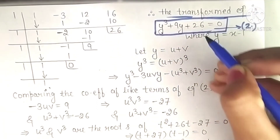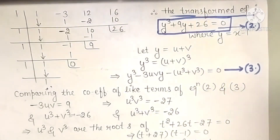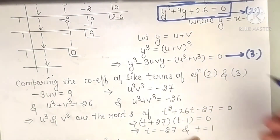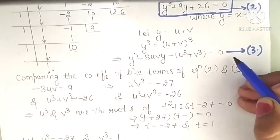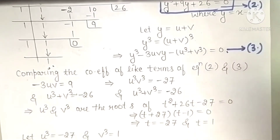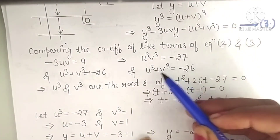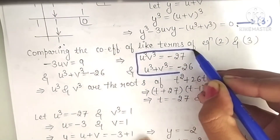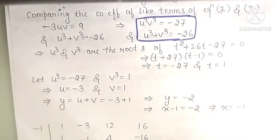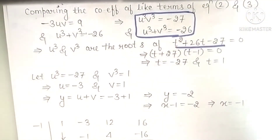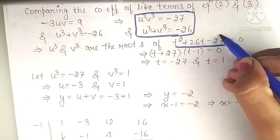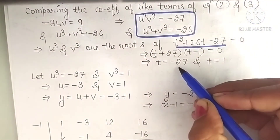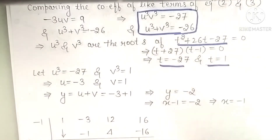We will now apply Cardan's method because the transformed equation has no square term. We let y = u + v, cube both sides, and compare coefficients to find u³, v³ and their sum and product. We form the quadratic equation whose roots are u³ and v³, then factor or use the discriminant formula. Factoring gives t = −27 and t = 1.